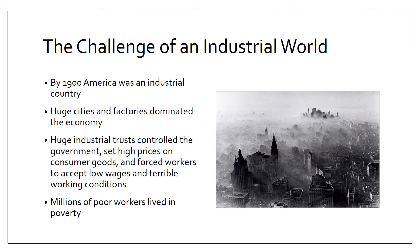As a result of this industrial expansion, huge industrial trusts controlled the government through buying off corrupt representatives. They were able to set high prices on consumer goods and force workers to accept very low wages and terrible working conditions. Millions of poor workers lived in poverty. So even though America was now the richest country in the world, millions of Americans were still living in poverty, and it looked like things were just going to get worse.